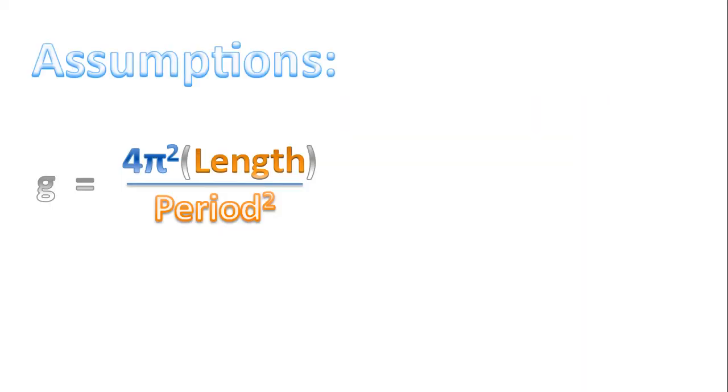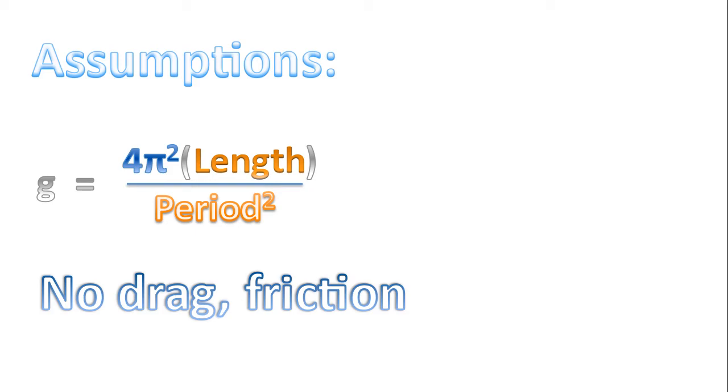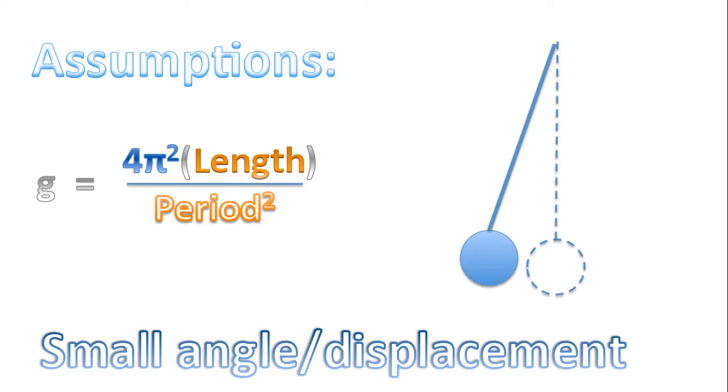The last thing I want to discuss are some of the assumptions we made in using this formula. One of the assumptions is that there's no drag or friction. I want you to think about why it's a valid assumption. And so what I mean by a small angle or displacement is that when you move the pendulum bob away from the rest position, you don't move it by a very large amount.